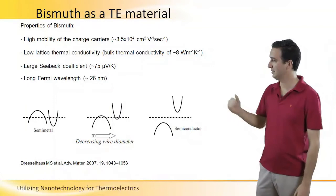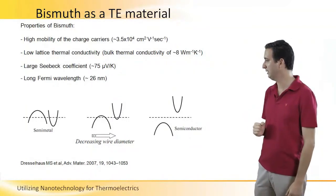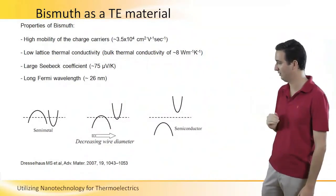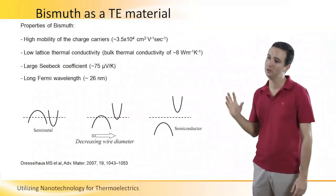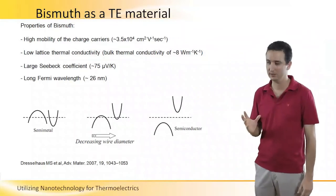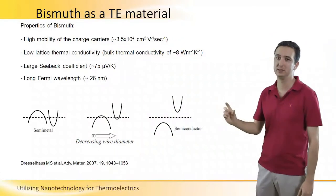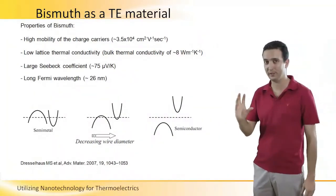In addition, it has a large Seebeck coefficient and a long Fermi wavelength. The meaning of the long Fermi wavelength is very important when you go down to the nanometric level, because once you go down below the Fermi wavelength, you start to see the quantum confinement effects.